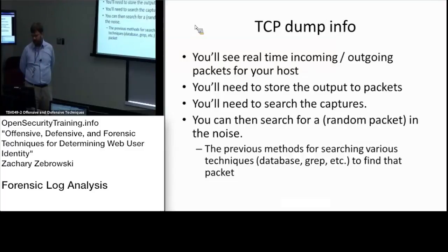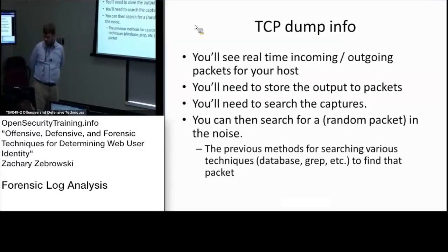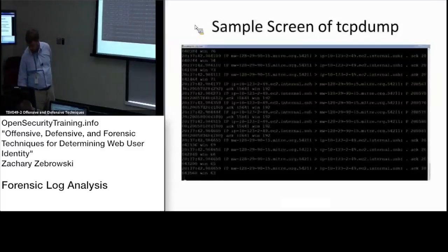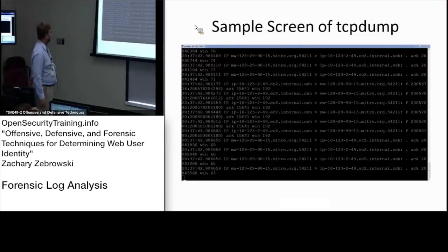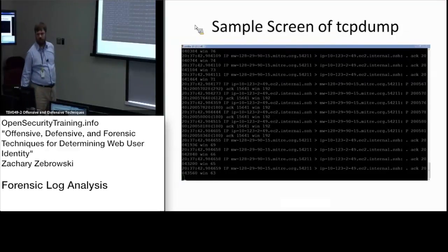To search for a random packet you really need to be organized, know how to use databases, and know how to use grep to look for appropriate packets, because they might be very hard to find if you're dealing with a lot of data. This is a sample screen of Netcat, which is incredibly tiny. Basically, this shows a host on myer.org going to an Amazon EC2 instance, with acknowledgement packets going back and forth while something's happening in the background.